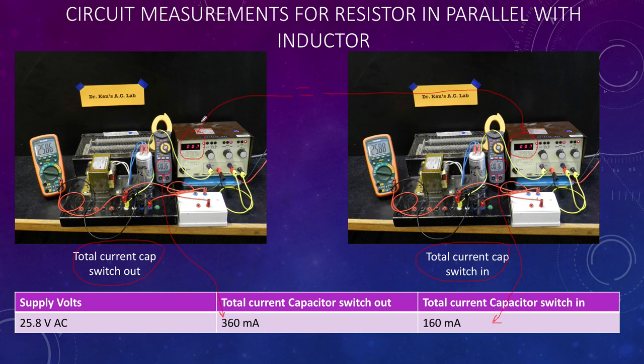Because the power hasn't changed, that's an important aspect of power factor correction. We've reduced the current, but we haven't reduced the amount of power that the installation is drawing. In this case the power is the internal resistance of our inductor representative, representing our motor.